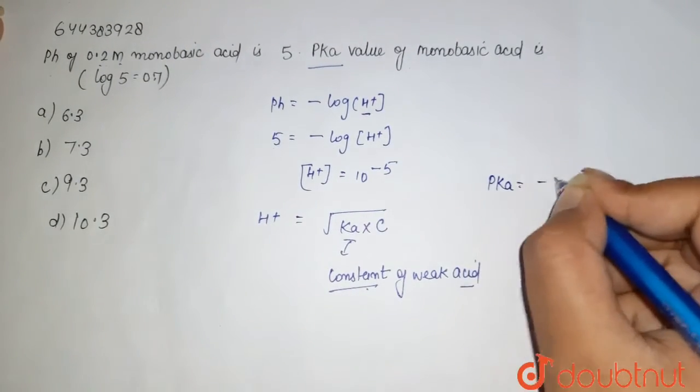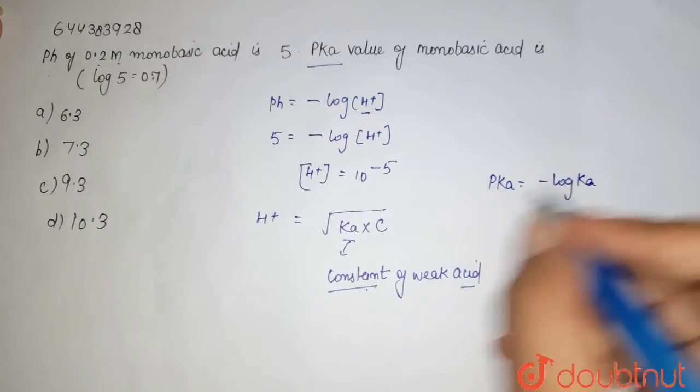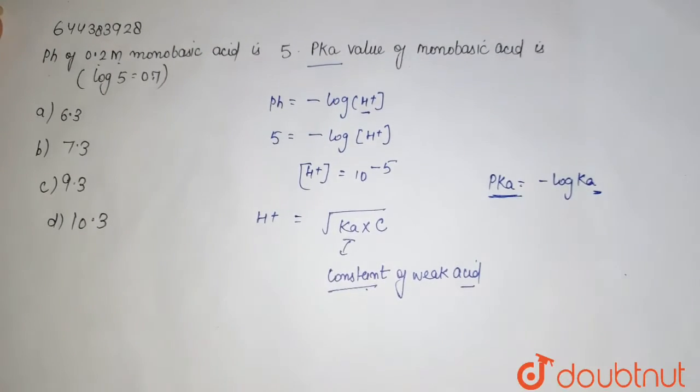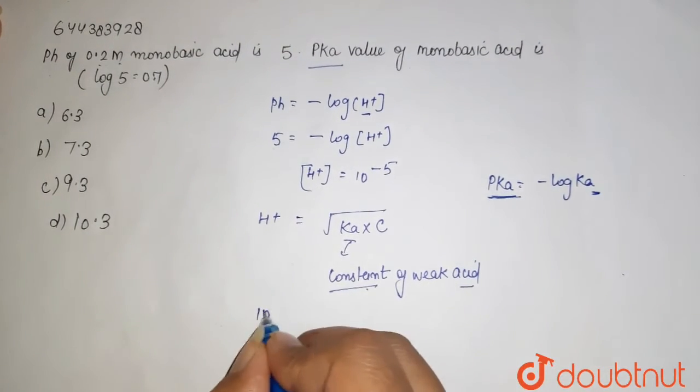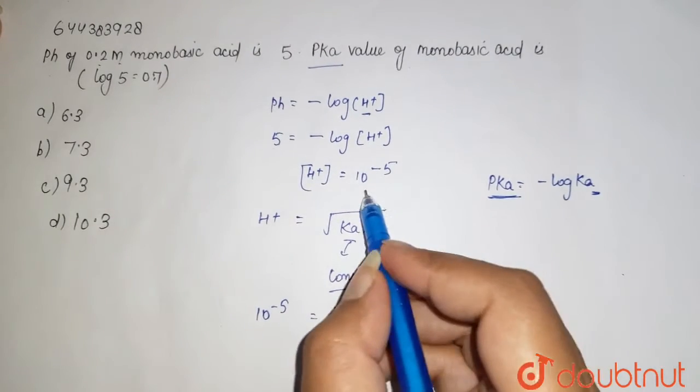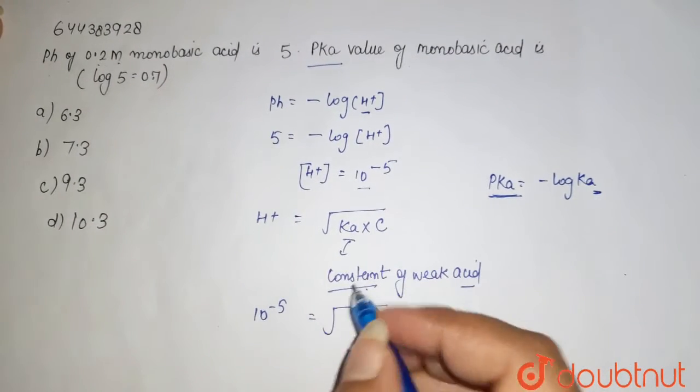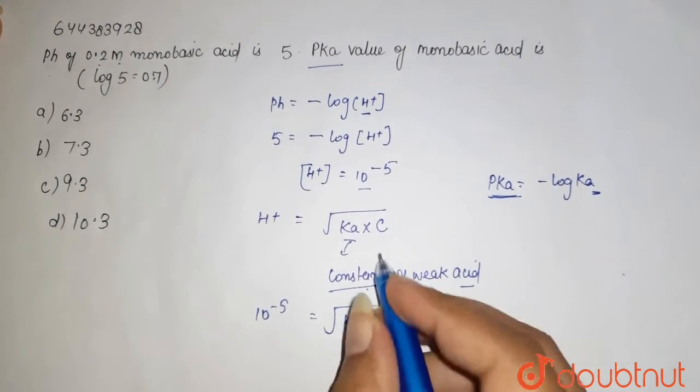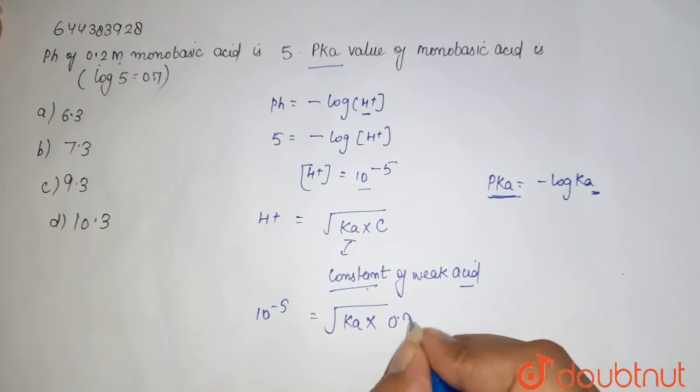So what we do - pKa which is equal to minus log Ka. So we find Ka from here and then we will find the pKa. So here H+ that is your 10 to the power minus 5, that is your concentration. Ka we need to find it out. Concentration that is given, that is your 0.2. Remove the root,